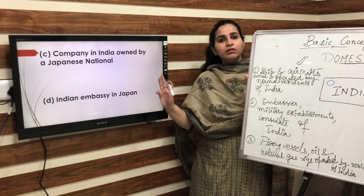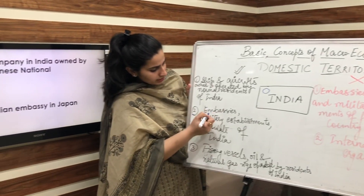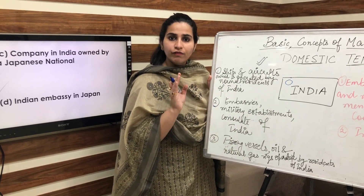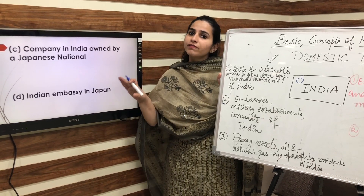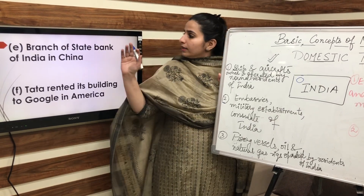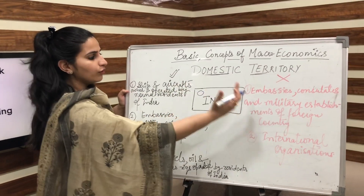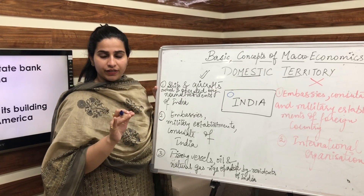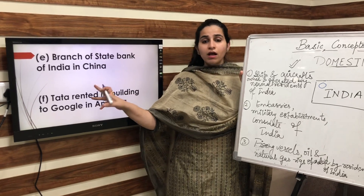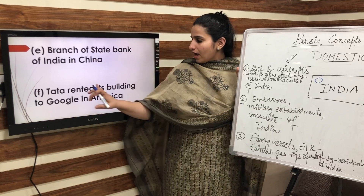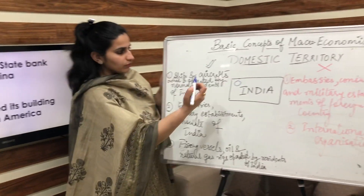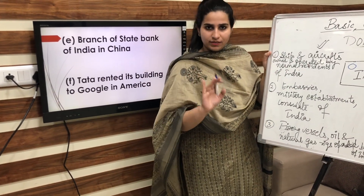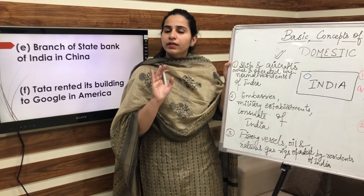Next: Indian embassy in Japan. As discussed, embassies and military establishments of India anywhere in the world will be considered as domestic territory of India, so yes, Indian embassy in Japan is part of Indian domestic territory. Next: branch of State Bank of India in China — China is not within the geographical boundary of India, so this will not be considered as domestic territory of India; rather, it will be considered as domestic territory of China. Finally: Tata rented its building to Google in America — America is not within the geographical boundary of India, so it will be considered as domestic territory of the United States of America, not India.